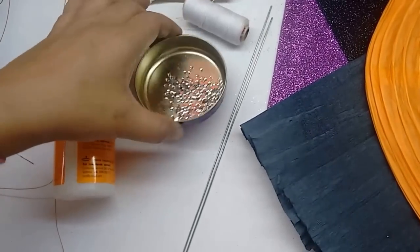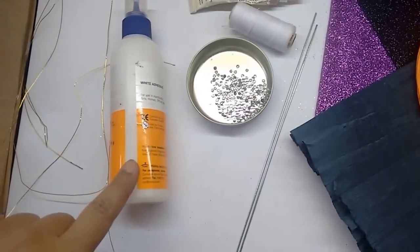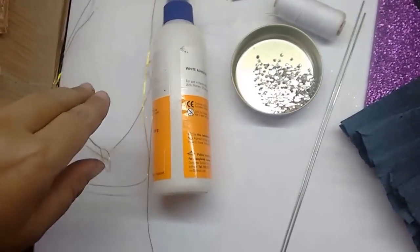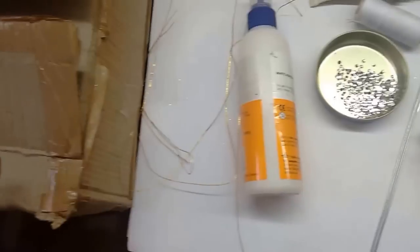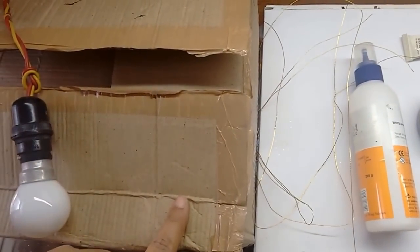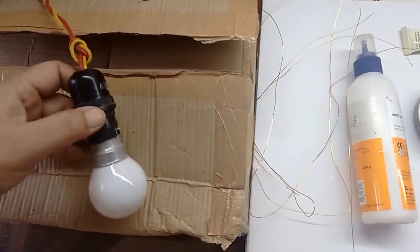Some white studs, glue, thin wires, cardboard probably from a box, and bulb and wire.